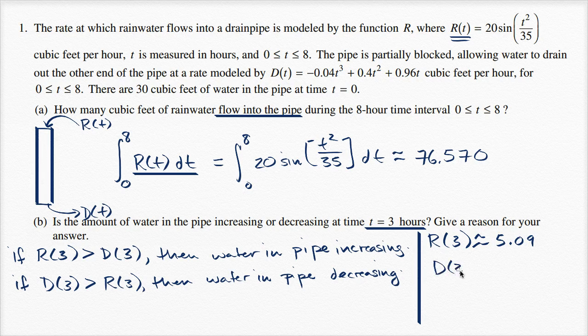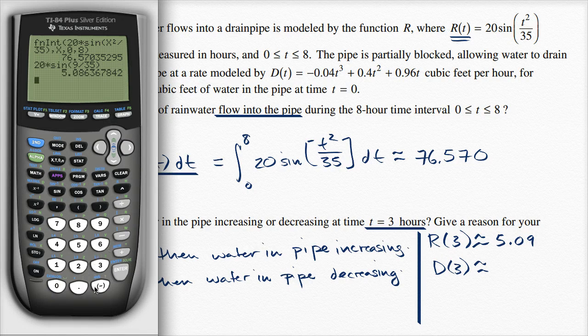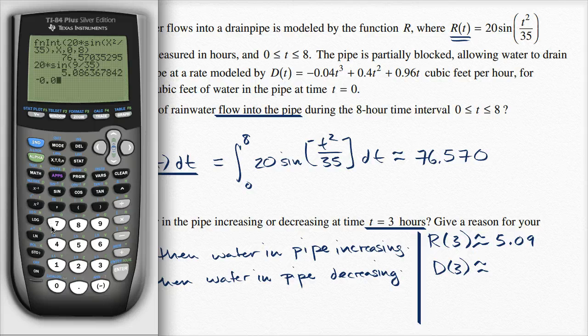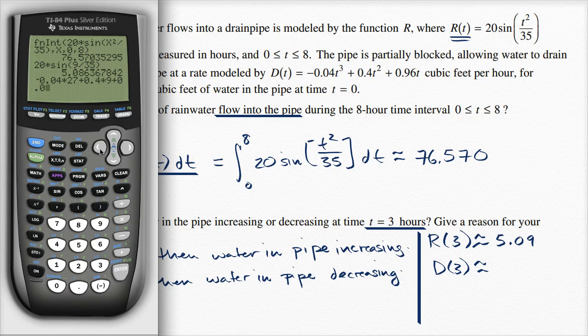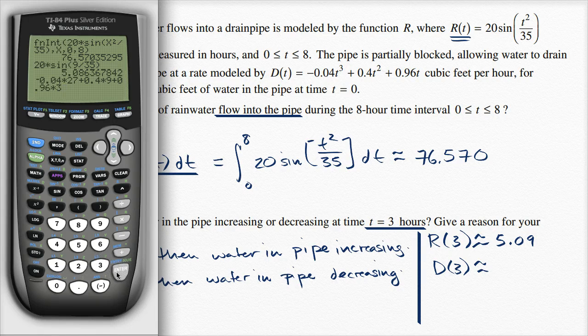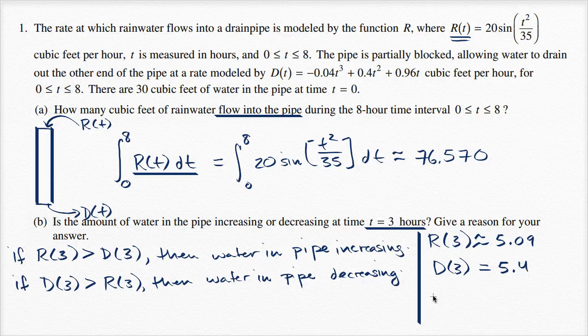And D(3), D(3) is going to be approximately. So let me get the calculator back out. So it is, we have negative 0.04 times three to the third power, so times 27, plus 0.4 times nine, times nine t squared, plus 0.96 times t, times three. And this gives us 5.4. So this is equal to 5.4.